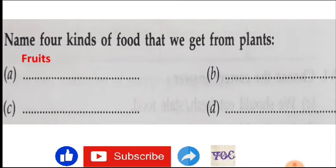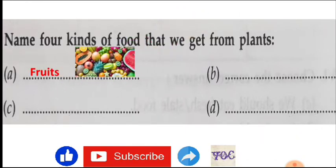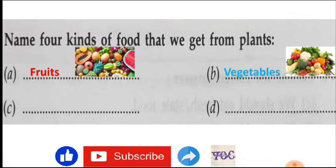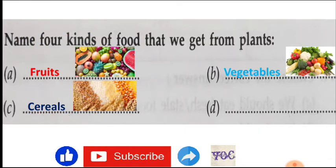Let's see. Number one, that is fruits. You know very well, fruits. Next, number two may be B, that is vegetables. Okay, vegetables we can get from plants, na? Next may be that is cereals.